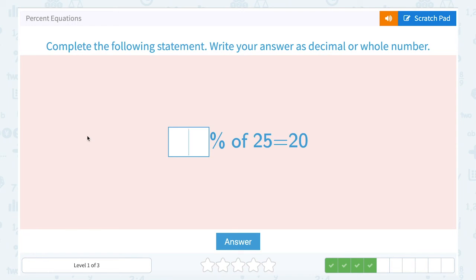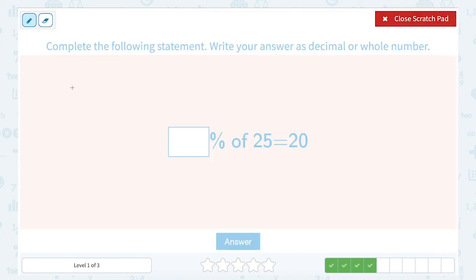Blank percent of 25 equals 20. Let's set this up just like we did with the last one. A percentage times our number 25 is equal to 20. It's the same thing as saying 25 times our percent equals 20.